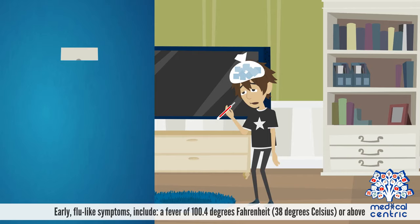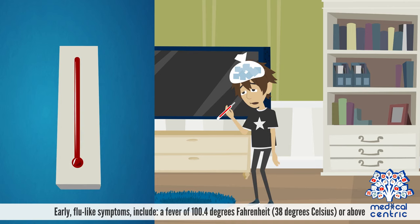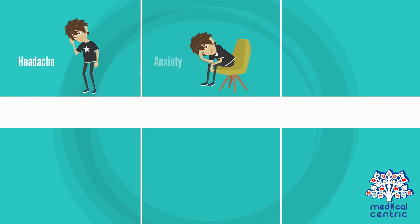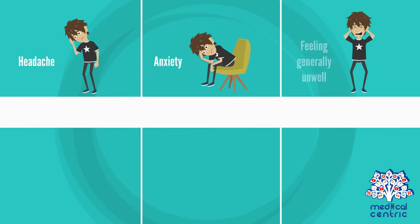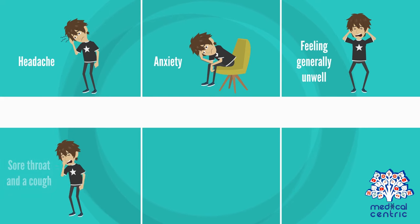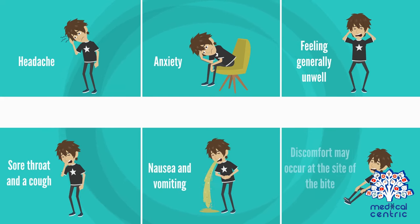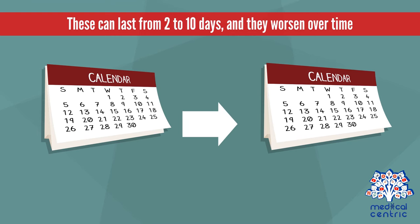Prodrome: early flu-like symptoms include a fever of 100.4 degrees Fahrenheit or 38 degrees Celsius or above, headache, anxiety, feeling generally unwell, sore throat and a cough, and nausea and vomiting. Discomfort may occur at the site of the bite. These symptoms can last from two to ten days and they worsen over time.